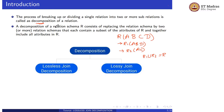A decomposition of a relation schema R consists of replacing the relation schema by two or more relation schemas, where R1 union R2 must be equal to R.